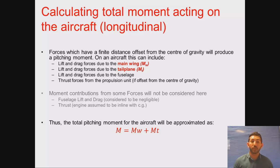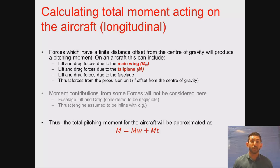The forces on the aircraft include lift and drag from the main wing, lift and drag from the tail, lift and drag from the fuselage, and thrust from the propulsion unit. For simplicity, we'll neglect fuselage lift and drag and assume thrust is in line with the centre of gravity so it produces no moment. The total pitching moment can then be approximated by aggregating the moment from the main wing with the moment from the tail.